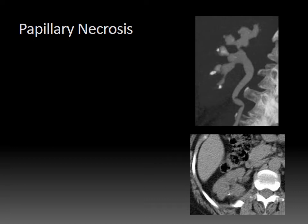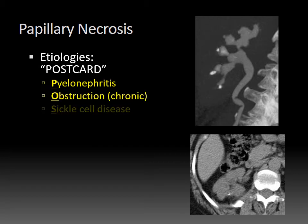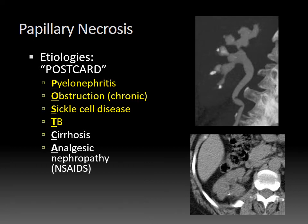For different causes of papillary necrosis, you may use the mnemonic POSTCARD. P is pyelonephritis. O is obstruction, usually chronic. S is sickle cell disease, which gives the most impressive variants. T is TB — tuberculosis — which often gives additional areas of amorphous calcification in the kidney as well as asymmetric caliectasis due to infundibular stenosis. Less common causes include cirrhosis, analgesic nephropathy, renal vein thrombosis, and diabetes mellitus. If you just remember POST from POSTCARD, you're in good shape.